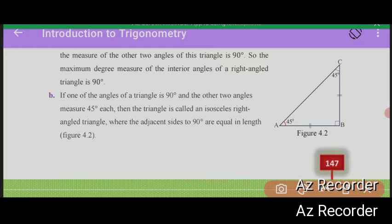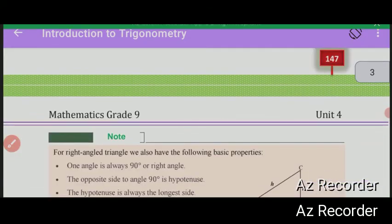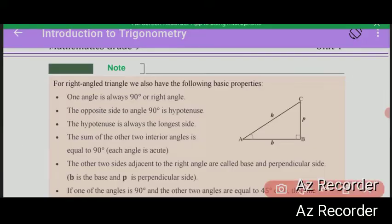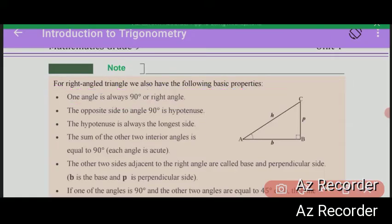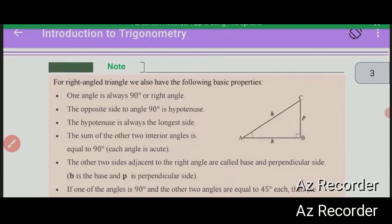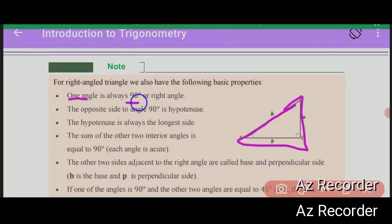Notes for right-angled triangles: we also have the following basic properties. One angle is always 90 degrees, or a right angle.